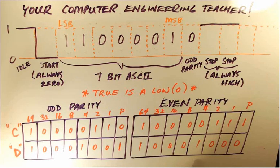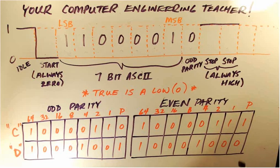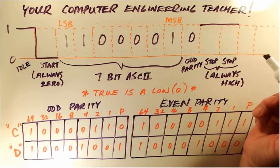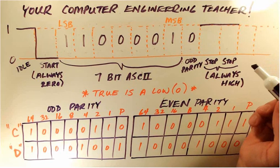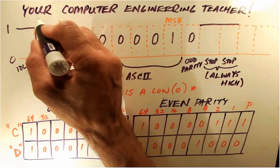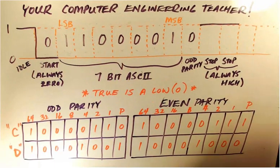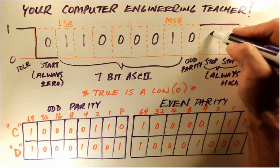Next thing is we also have what we call start and stop bits and that indicates that there is a new character coming down the wire. The stop bits tell it that that character is finished and we're waiting for the next character. To make things simple we are always going to say that the start bit is a low. It's always zero and the stop bits are always one.